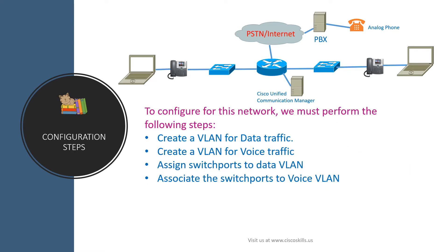To configure this network, we must perform the following steps: create a VLAN for data traffic, create a VLAN for voice traffic, assign a switch port to the data VLAN, and associate the switch port to the voice VLAN.